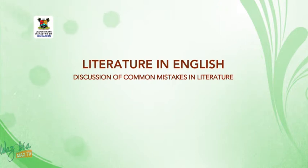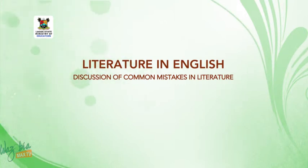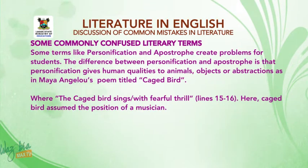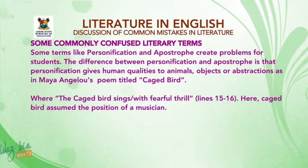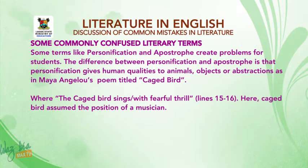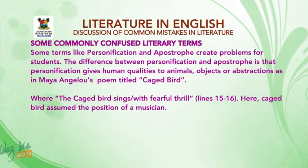Welcome to the third segment, which is the continuation of commonly confused terms in literature. Some commonly confused literary terms like personification and apostrophe create problems for students. Personification gives human qualities to animals, objects, or abstractions, as in Maya Angelou's poem 'Caged Bird,' where 'the caged bird sings with a fearful trill' (lines 15–16). Here, the caged bird assumes the position of a musician.